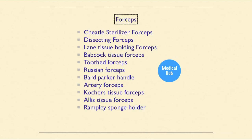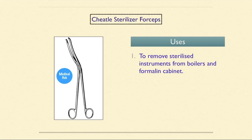Now we will discuss forceps, including: chital sterilizer forceps, dissecting forceps, lint tissue holding forceps, Babcock tissue forceps, toothed forceps, Russian forceps, Burt Parker handle, artery forceps, couture tissue forceps, Alice tissue forceps, and Ramplace sponge holder. The chital sterilizer forceps is used to remove sterilized instruments from boilers and formalin cabinets.